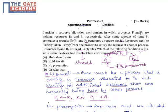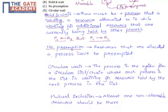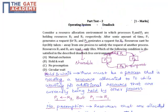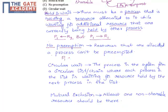Next one: No Preemption. It is nothing but resources that are allocated to a process cannot be preempted — that is, we can't forcibly take the resource. From this question, we learned that resources should not be forcibly taken away, so process P1 has to hold R2 and process P2 has to hold R1.